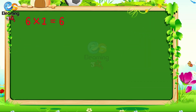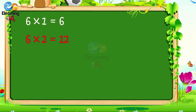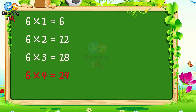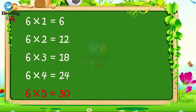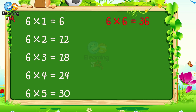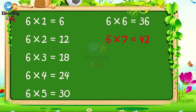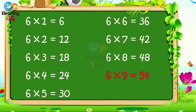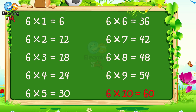6 1s are 6. 6 2s are 12. 6 3s are 18. 6 4s are 24. 6 5s are 30. 6 6s are 36. 6 7s are 42. 6 8s are 48. 6 9s are 54. 6 10s are 60.